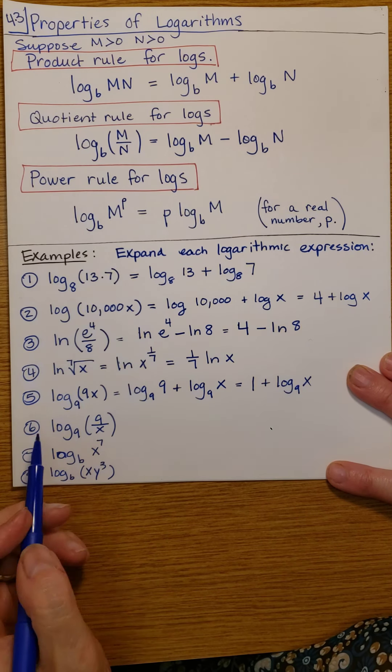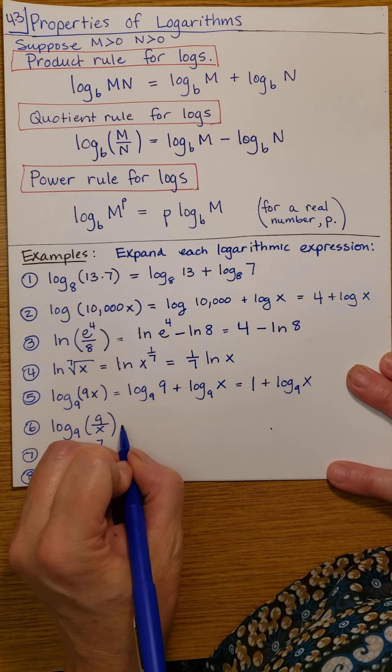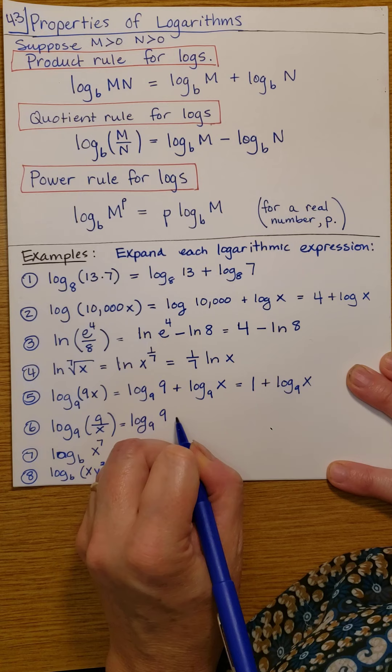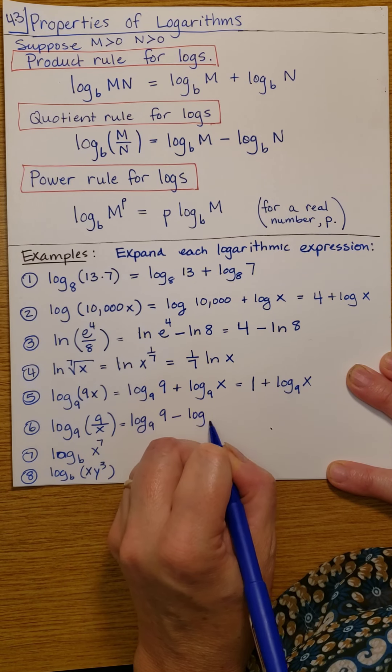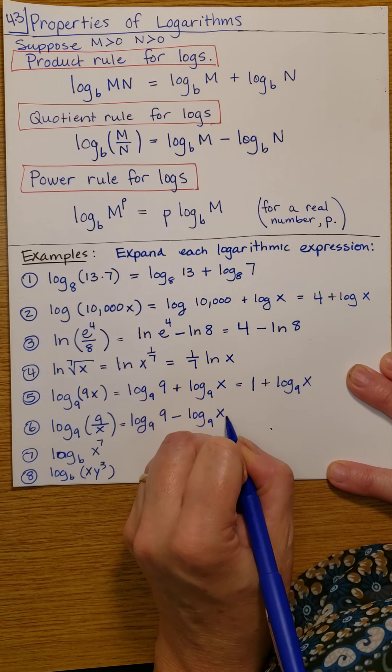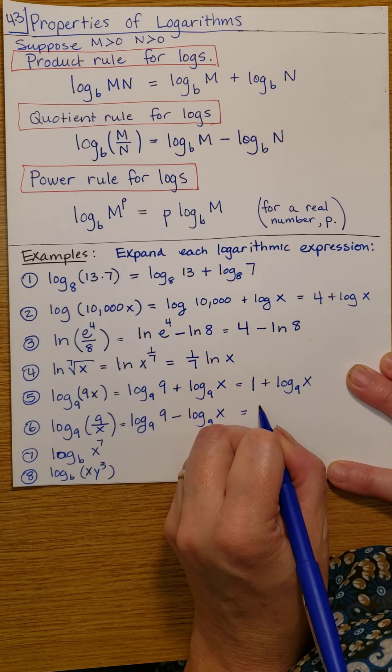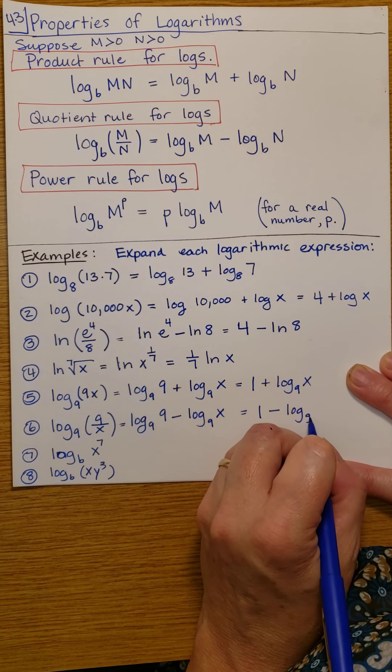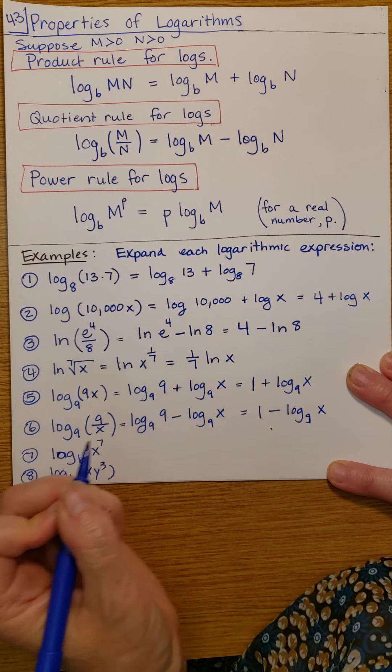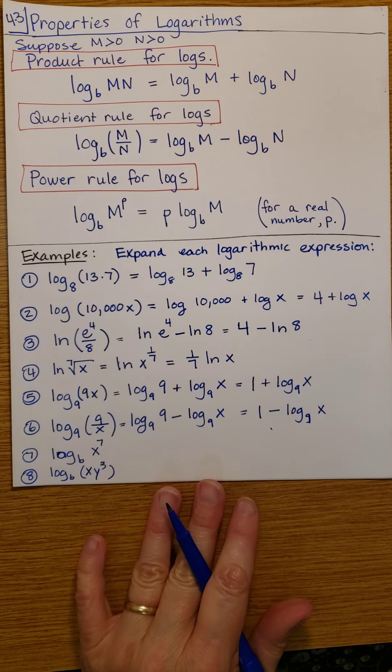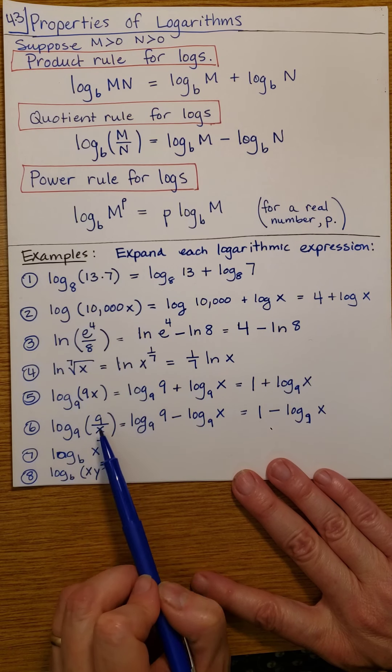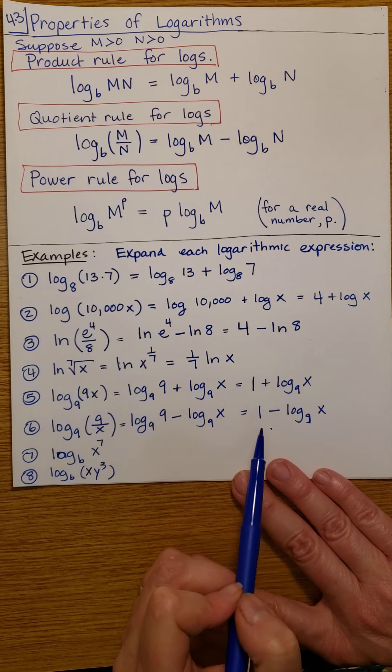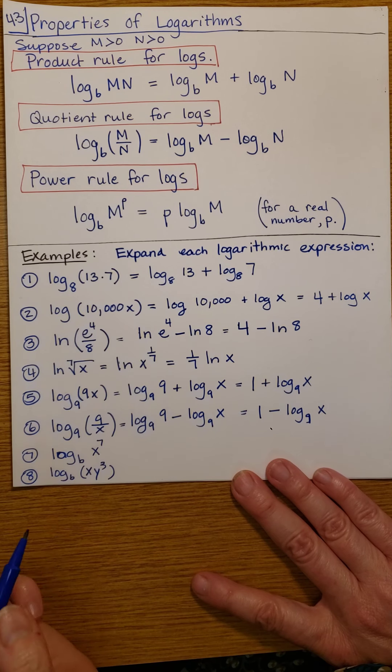Here we have, again, a quotient. Whoops. That's supposed to be a 9. OK, so we just take the difference now, because we have a quotient. We're going to take the difference of logs. This, of course, is 1 and then minus log 9 of x.